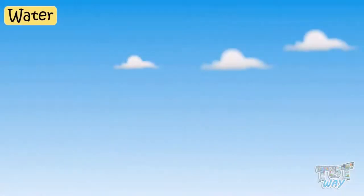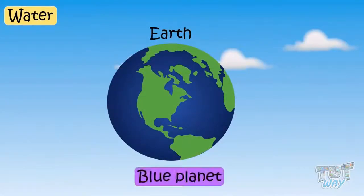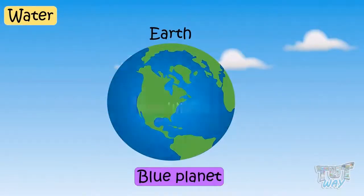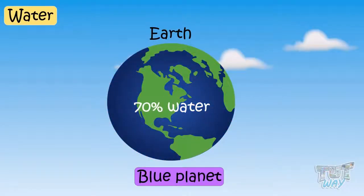Our planet, the Earth, is called Blue Planet because 70% of the Earth's surface is covered with water. So a big part of the environment is water.